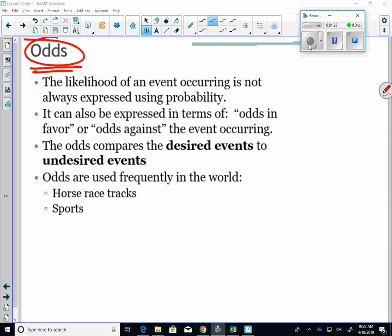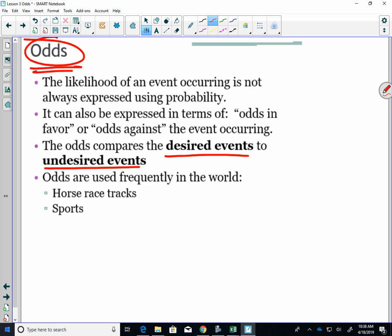So the likelihood of an event occurring is not always expressed using probability. It can also be expressed in terms of odds in favor or odds against the event occurring. The odds compares the desired events to the undesired events. That's the key thing there. So good things versus bad things, as opposed to good things out of total possible things.